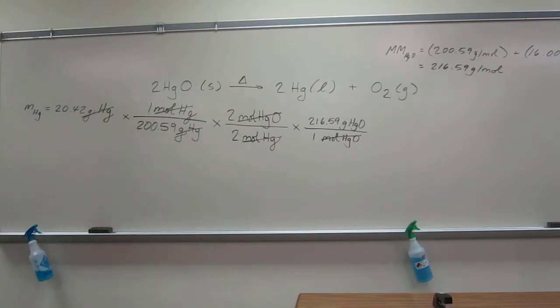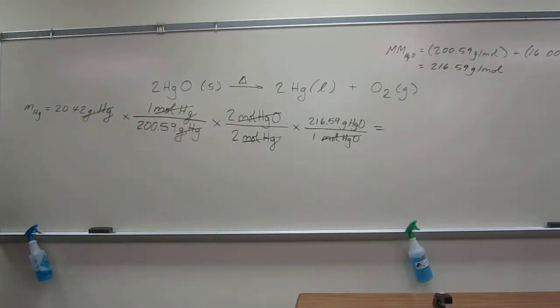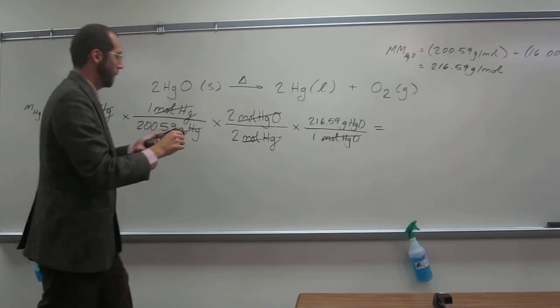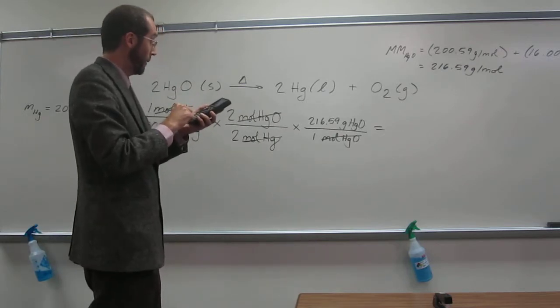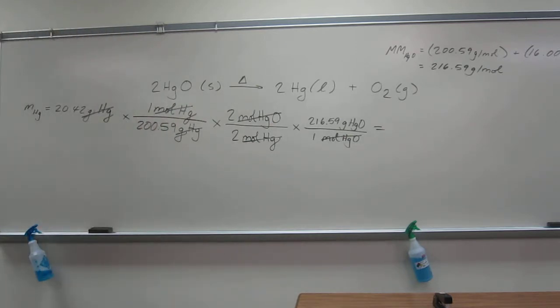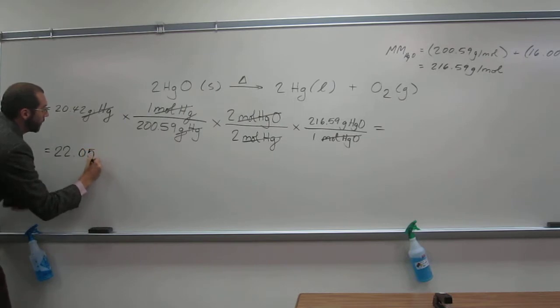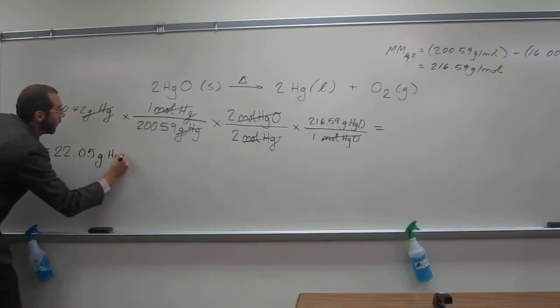Okay, so now all we do is plug and chug, right? So, 20.42 divided by 200.59, 2 divided by 2 is 1, so I'm just going to skip that, and then multiply by 216.59. And I get, and I want this to 4 sig figs, is everybody cool with that, 4 sig figs, and I get 22.05 grams of mercury 2 oxide.